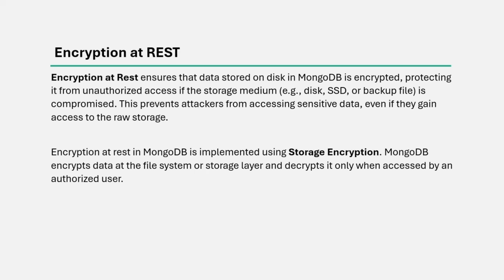Encryption at rest in MongoDB is implemented using storage encryption. MongoDB encrypts data at the file system or storage layer and decrypts it only when accessed by an authorized user. In simple terms, encryption at rest means encrypting the stored data on the MongoDB server.